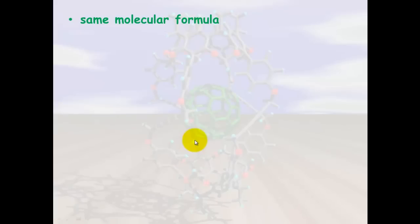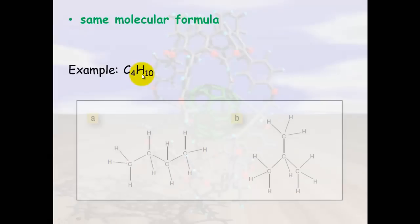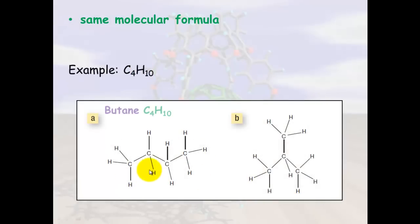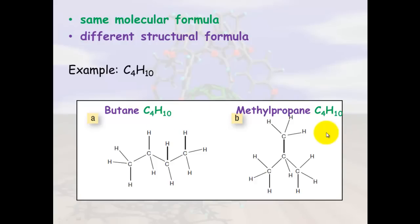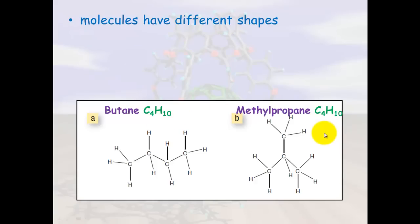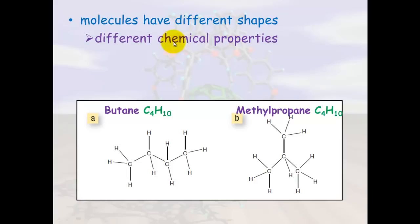Structural isomers have the same molecular formula — for example, C4H10 — but they have different structural formulas. If you compare the structure of butane, which is C4H10, with methylpropane, which is also C4H10, they have the same molecular formula but different structural formulas. This means they have different shapes and thus different chemical properties, and obviously different names. We're going to look into naming these in the next video.